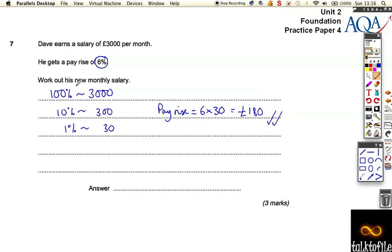It does ask for his new monthly salary, so we've got to add that on to his £3,000, which is obviously £3,180. That's his new salary there. So be careful about that. If you didn't add on the £180, you would have lost the final, the third and final mark.